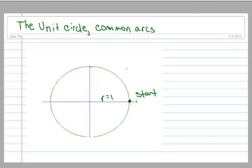And then a few other basics here. When I travel in this direction, this is considered the positive direction. If I'm traveling in this direction, that's considered the negative direction.